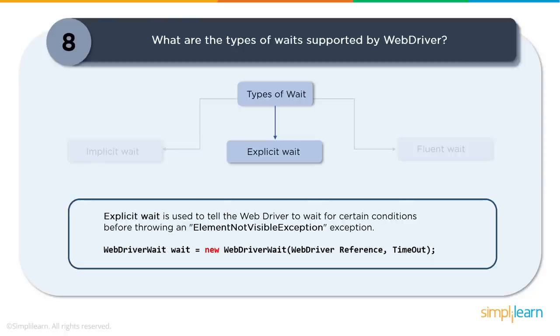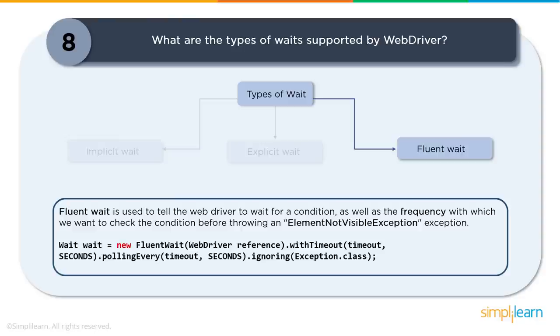Explicit wait tells the WebDriver to wait for certain conditions before throwing an ElementNotVisibleException. It is defined for specific expected conditions only — such as whether an element is displayed or can be clicked. These are called conditional waits, applied to a single web element unlike implicit wait which is global. It is recommended to use explicit waits when elements take longer to load and for verifying properties like element visibility, clickability, or selection state.